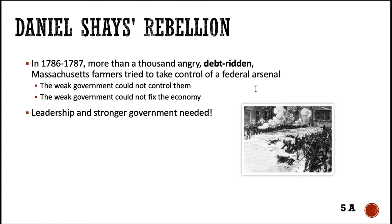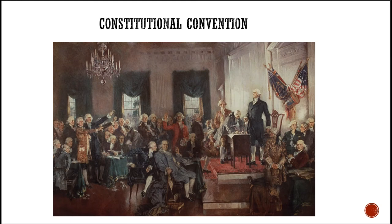We need leadership and we need a stronger central government — can't leave everything up to the states. So what did we do? The Constitutional Convention. This portrait should look pretty familiar along with some of the people in it. The Constitutional Convention was originally called to fix the problems with the Articles of Confederation. What they actually ended up doing was scrapping the whole thing.